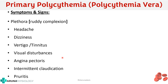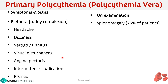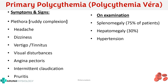On examination, you will find splenomegaly in 75% of patients, hepatomegaly, and hypertension. These are the three important features found on examination.